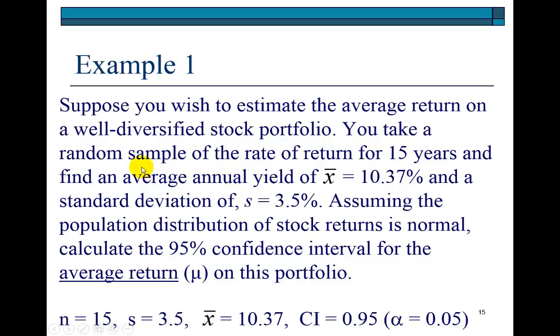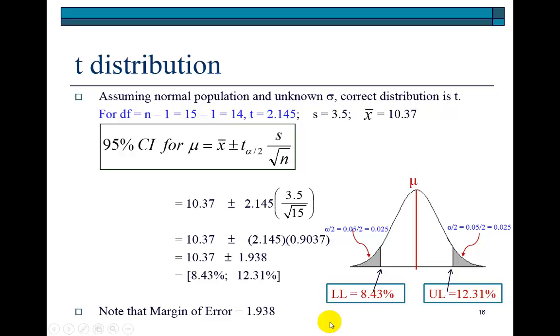Here's a quick example. We're looking at the performance of a portfolio. Taking a random sample of 15 annual returns, we find the average annual rate of return to be 10.37% with a sample standard deviation of 3.5%. We wish to calculate the 95% confidence interval for the population mean return on this portfolio.